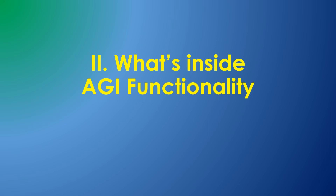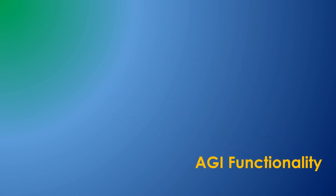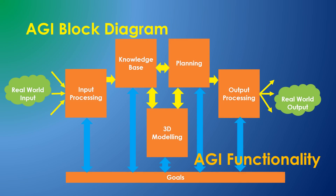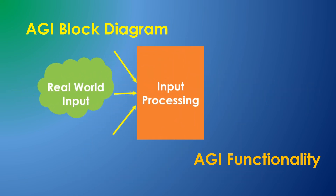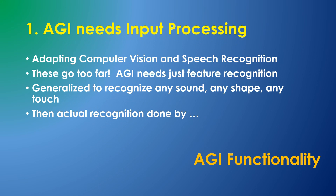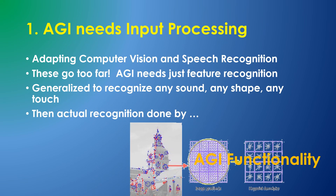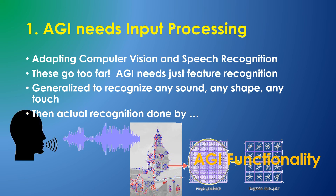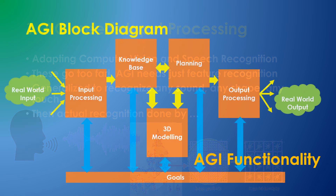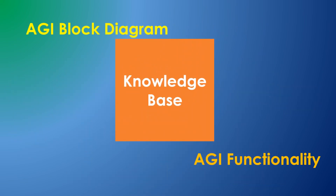Here is the functionality I'm working on, with a block diagram of an end-to-end AGI system. I'll explain how the various modules rely on and differ from existing technology, starting with input processing. At the very least, AGI needs vision and sound input. Today's computer vision and speech recognition applications go too far — AGI just needs feature extraction. This allows for more generalization, so that both sound and vision can accept any generalized input, allowing the AGI to learn a new language or new symbols. The actual recognition is done by the next step in the block diagram: the abstract knowledge base.